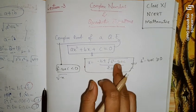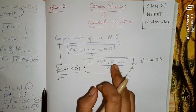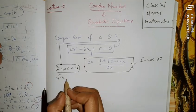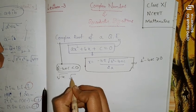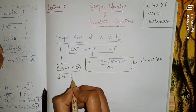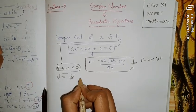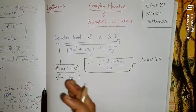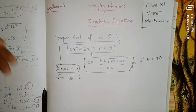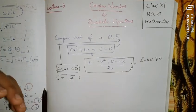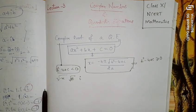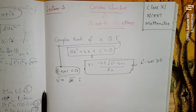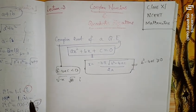When b² − 4ac is negative, the square root of a negative number introduces the imaginary unit i (where i = √(−1)). With this concept, let's go directly to Exercise 5.3 and solve the questions.